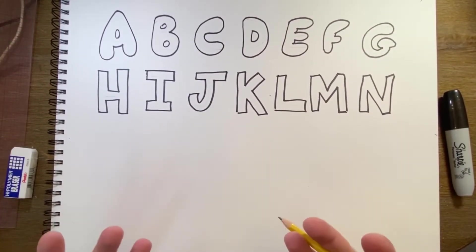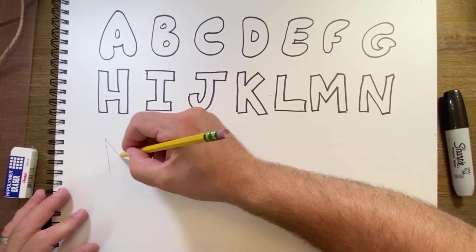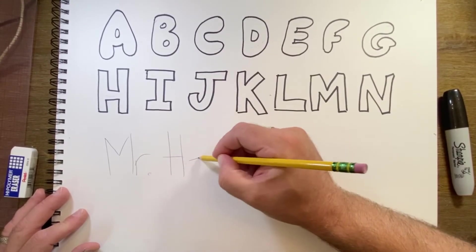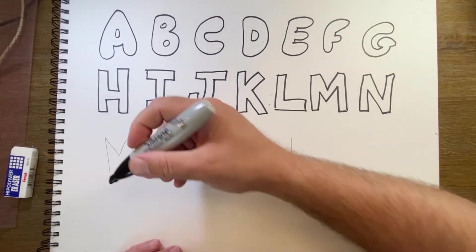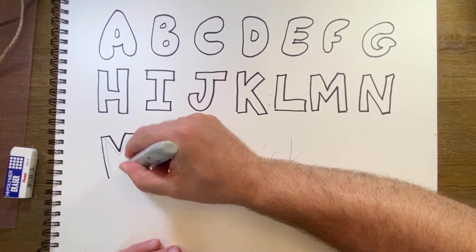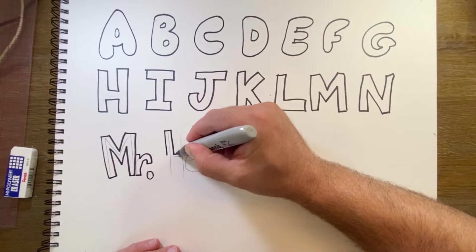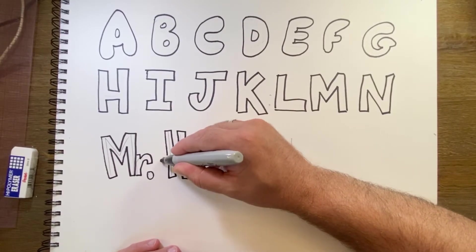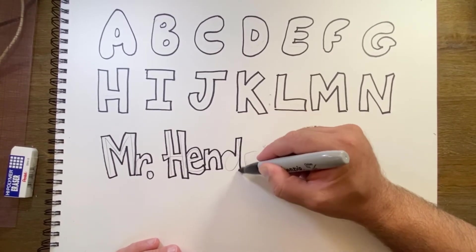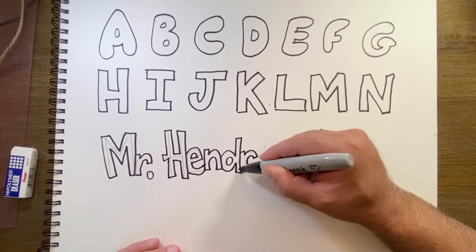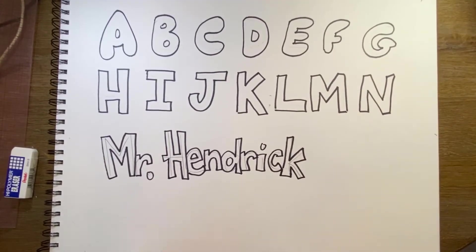Now, what if you wanted to put words together? The same rule applies — if you can write it, you can outline it. So if I write 'Mr. Hendrick' and keep my letters closer together, if a letter is blocking another letter, you want to take that into account. So if I start with the M — if I add the E, this R is slightly behind it. If I add the H, this E is slightly behind it.